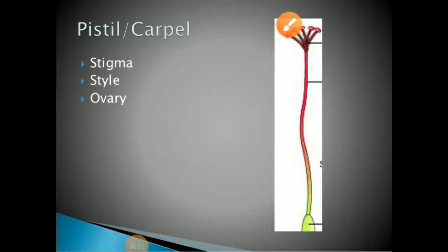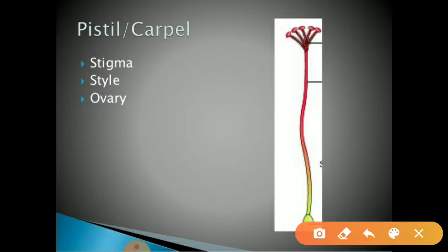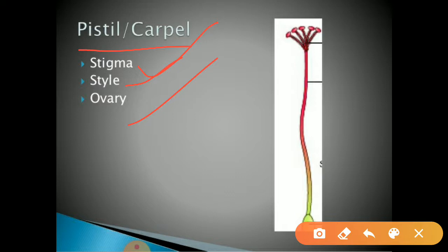Good morning students. Welcome back to our biology class. Today we are going to learn about carpel or pistil. What is carpel? It is the female part of the flower, otherwise we can call it as a gynaecium. This gynaecium consists of three parts: stigma, style, and ovary. These are the three parts of the carpel or gynaecium or pistil.